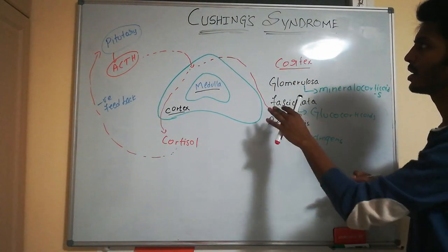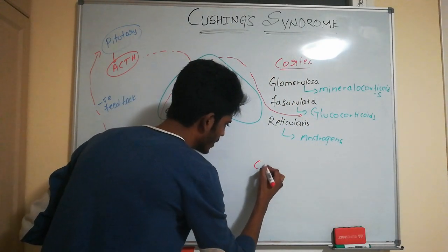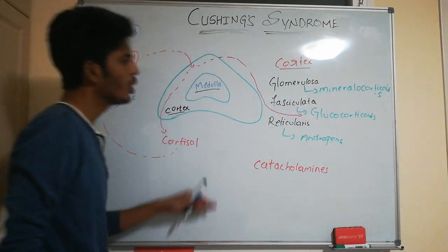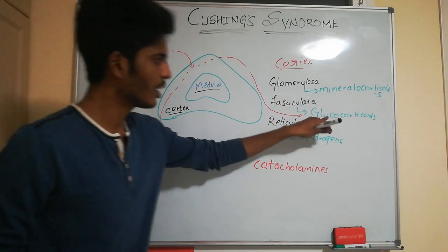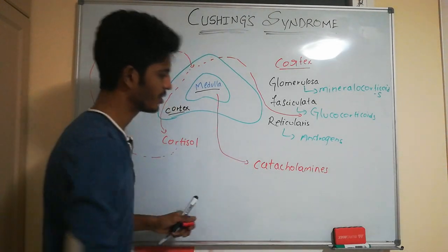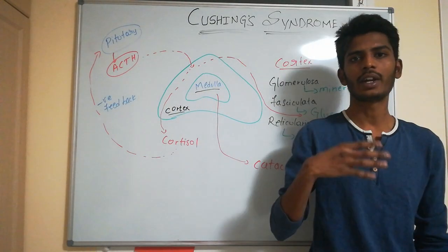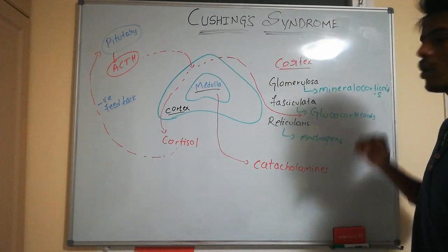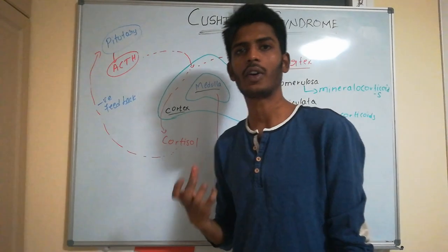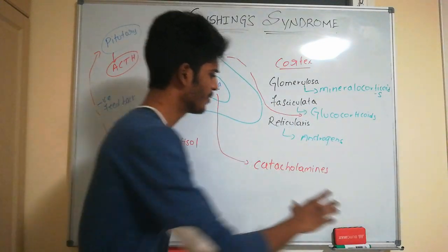The adrenal medulla produces catecholamines. Cushing syndrome is a disease associated with glucocorticoids, related to the cortex of the adrenal gland, and has no association with the medulla. The definition of Cushing syndrome is: any condition in which there is excessive stimulation of the glucocorticoid receptor.